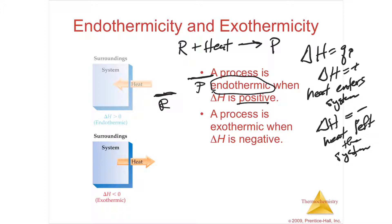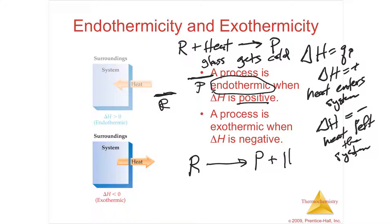The opposite is exothermic. Exo means out, thermic is temperature. If something's getting cold — like a cold pack in a first aid kit where you break the chemicals inside and it gets cold to reduce swelling — it's sucking the energy right out of your hand, which is why when you touch it, it's cold. A process that's exothermic is dumping heat out into the surroundings, so the glass gets hot. For exothermic: reactants yield products and then dump out heat.